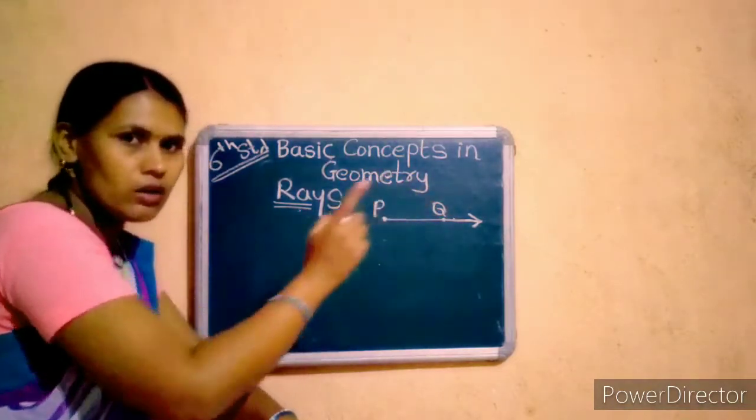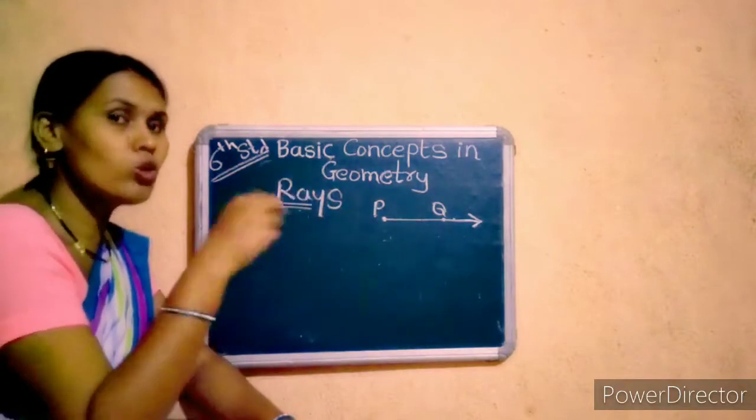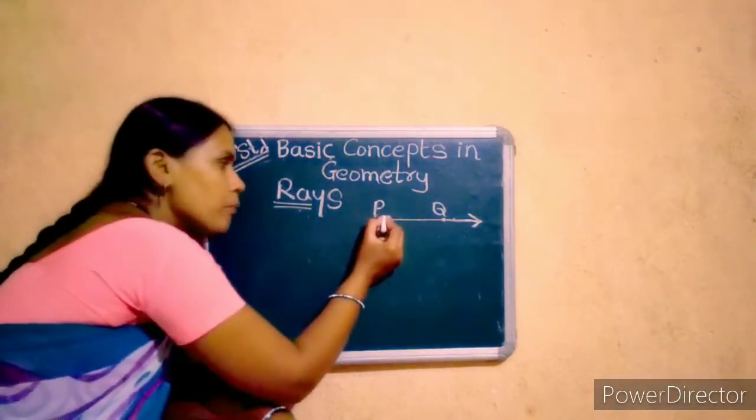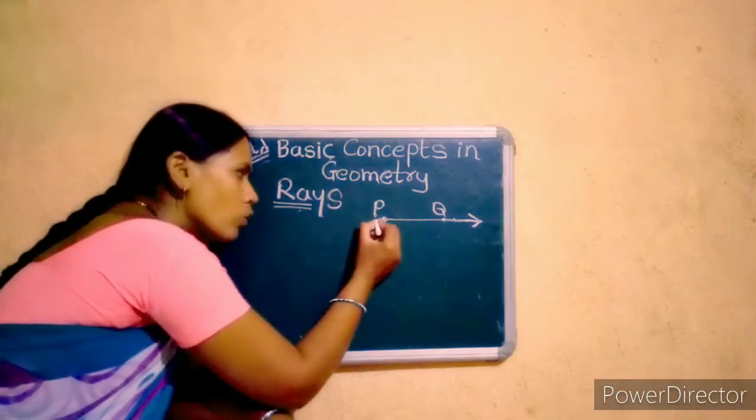This point P is called origin of this ray, meaning from this point the ray originates. Origin means starting place.